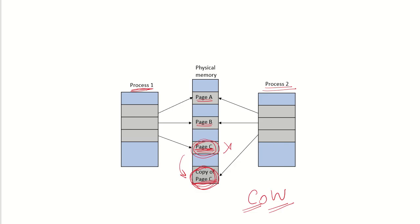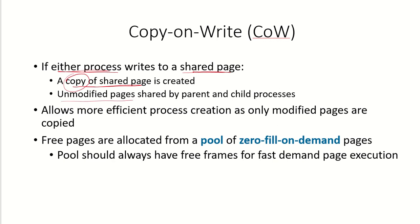Process 2 will no longer have access to the original copy of page C — it belongs only to process 1. If process 1 now wants to modify page B, a copy of page B is created and process 1 uses the new copy, while process 2 continues to use the original. Unmodified pages are still shared by both parent and child.